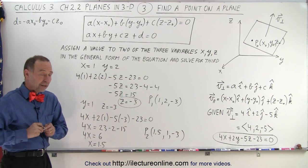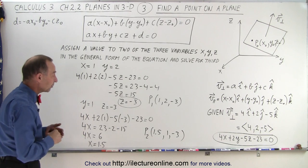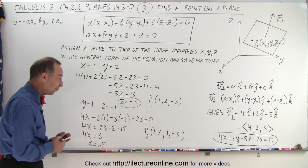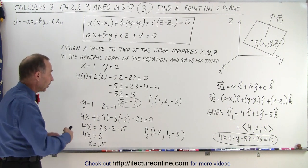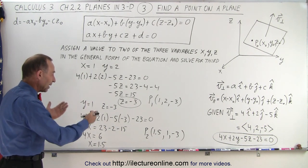And that's how we find any number of points on the plane. Of course, to find a specific point, that's a different story, because we don't know what x, y, and z are. But if you plug in any two values for x, y, and z, you can calculate the third using the general formula equation.